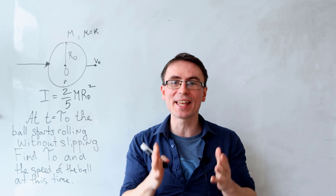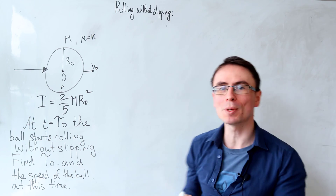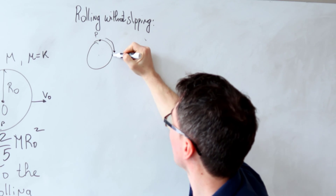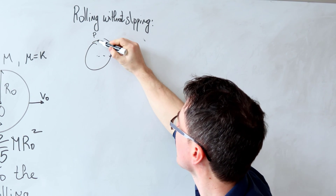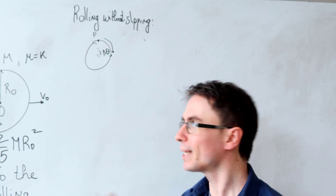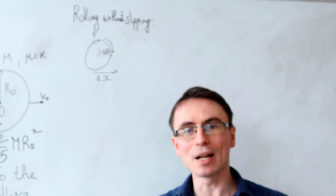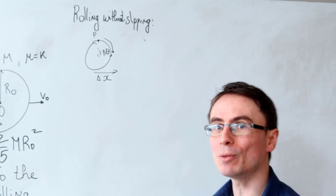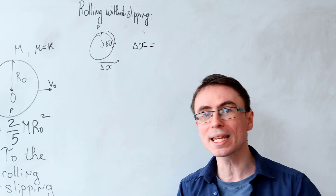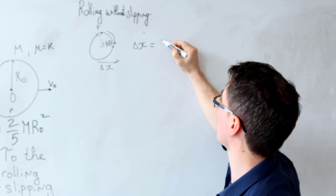Before we delve deeper, we need to understand what it means to be rolling without slipping. If a time interval passes and a point on the ball has moved to a new position, covering some angle Δθ, then during this time the ball also travels horizontally some distance Δx. The condition for rolling without slipping is that the horizontal distance Δx must equal the arc length s that this point has traveled.